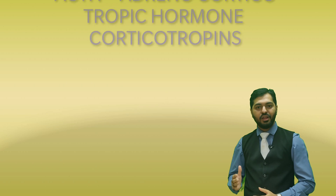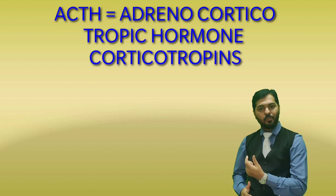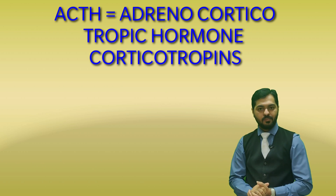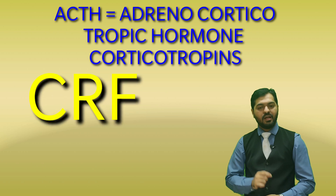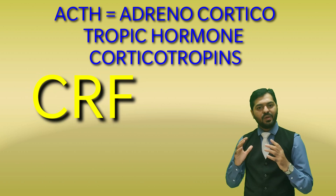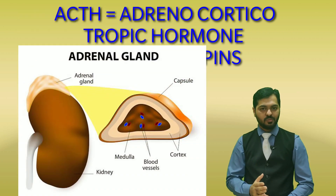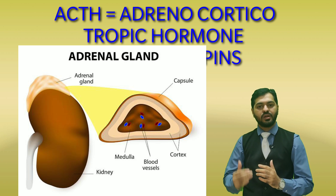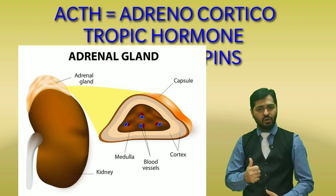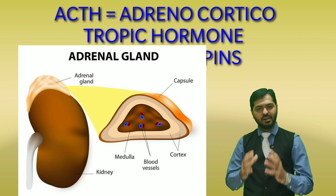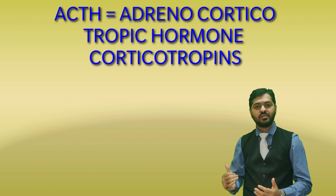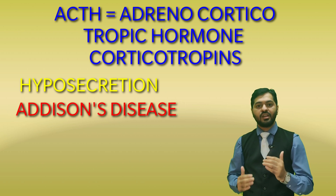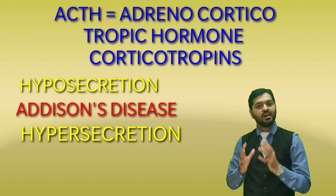The next hormone of the pars distalis is ACTH — adrenocorticotropic hormone — also known as corticotropin. It acts on the adrenal gland's cortex part. This hormone is controlled by the hypothalamic hormone CRF — Corticotropin Releasing Factor. ACTH stimulates the adrenal cortex to secrete corticosteroid hormones including glucocorticoids, mineralocorticoids, and androgenic steroids. Hyposecretion of ACTH results in Addison's disease, while hypersecretion of ACTH results in Cushing's disease.